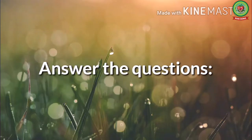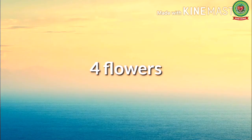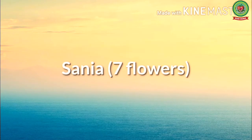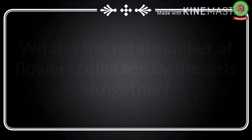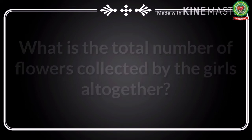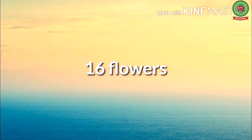Can you answer these simple questions based on the pictograph? How many flowers did Susan collect? According to the pictograph, Susan collected 4 flowers. Who collected the highest number of flowers? Sanya collected 7 flowers — that is the highest number. What is the total number of flowers collected by all the girls together? If we add the number of flowers collected by all the girls, we get the answer as 16 flowers.